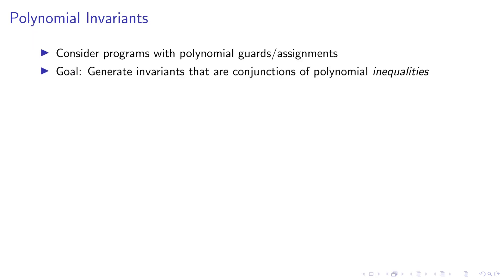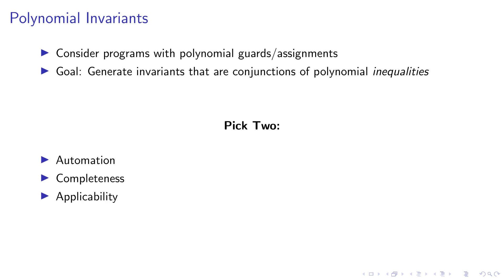In this work, we focus on polynomial invariant generation. We consider imperative programs with polynomial guards — so polynomial branching, polynomial guards for while loops, and polynomial assignments. We look into generating invariants that are conjunctions of polynomial inequalities. The important point is that we are generating polynomial inequalities and not equalities; many previous works focused on equalities, but this work is about inequalities.